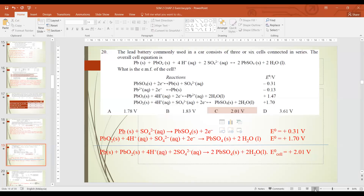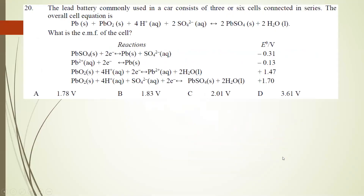Let's continue. So yesterday we started question number 19, and today we are going to cover question number 20. Question number 20: the lead battery commonly used in cars consists of three or six cells connected in series. The overall chemical equation is shown: Pb + PbO2 + 4H+ + 2SO4(2-). So what is the EMF of the cell? You must be very good at choosing which are the suitable equations.